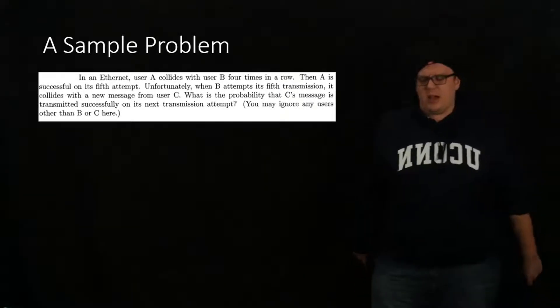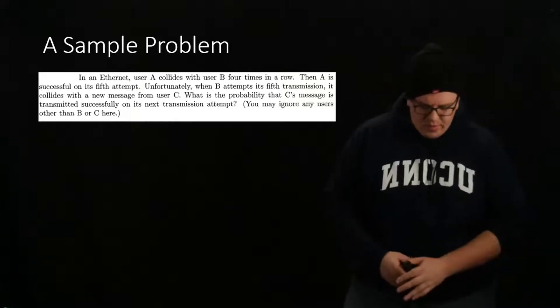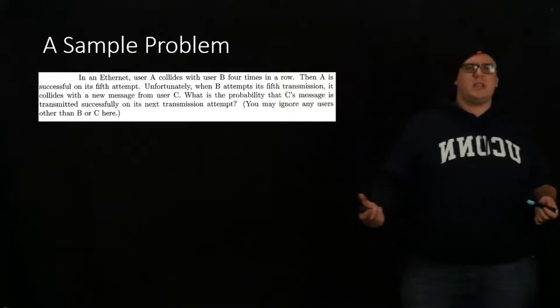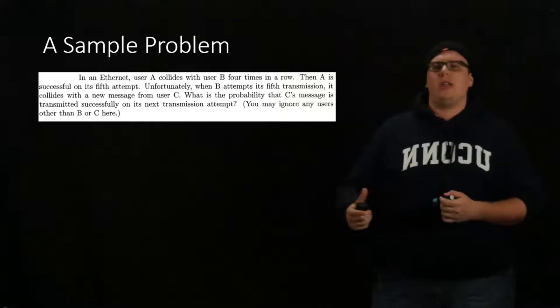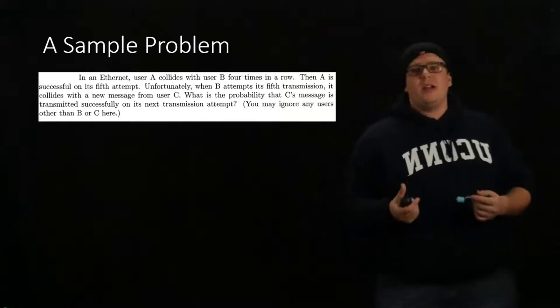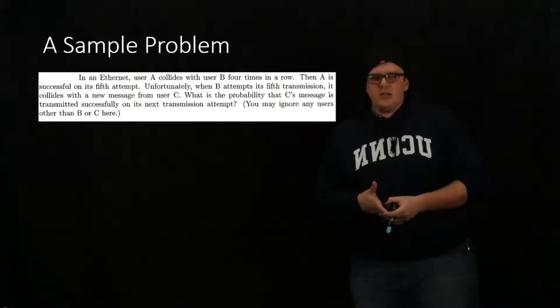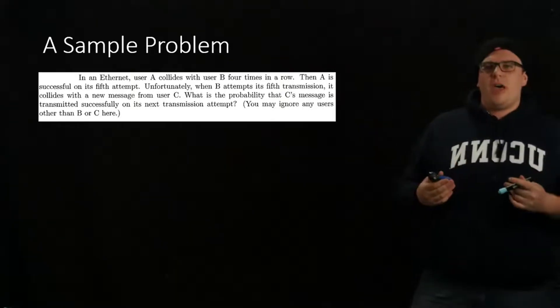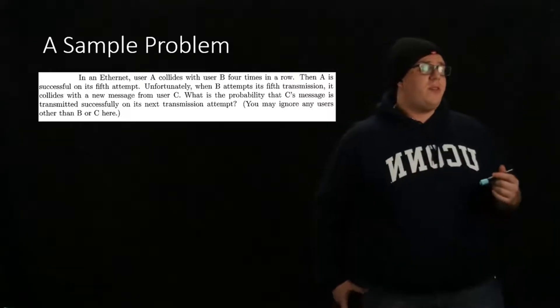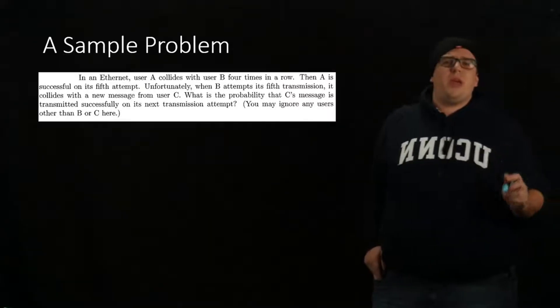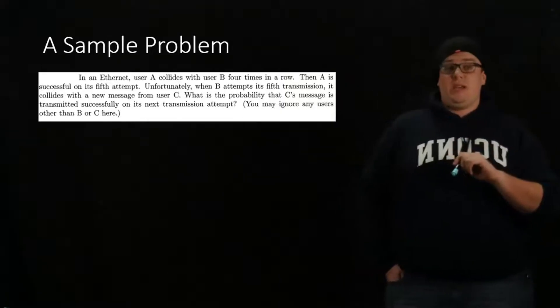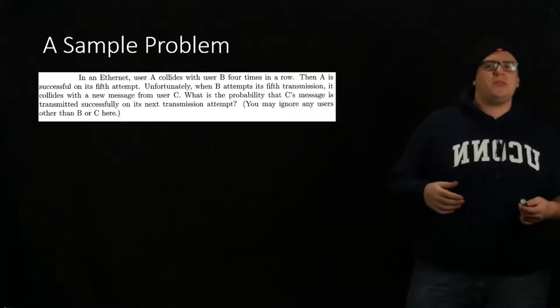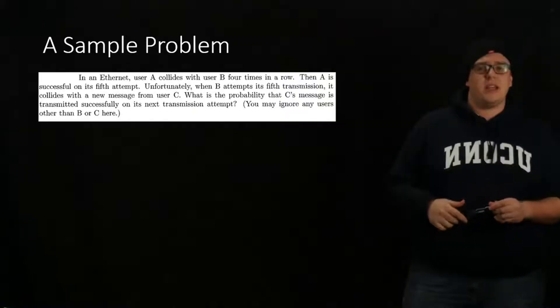Let's have an idea of a sample problem that we could do with Ethernet. This example problem is from Dr. Peter Willett, and it says that in an Ethernet system, user A collides with user B four times in a row. Then user A is successful on its fifth attempt, but user B collides with user C. What is the probability that C's message is transmitted successfully on its next transmission attempt?